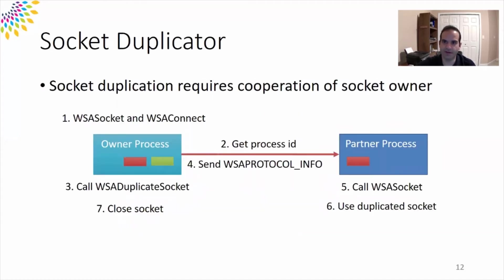Modern operating systems offer socket sharing; however, it requires the cooperation of the socket owner process. Suppose a client process on Windows wants to connect to a remote server and share the resulting socket with a partner process. First, it calls WSASocket and WSAConnect APIs to connect to the remote server. Then it gets the process ID of its partner. Next, it calls WSADuplicateSocket to obtain necessary information to reconstruct the socket. This information is passed to the partner process via an IPC channel. The partner process uses the received information to reconstruct the socket by calling WSASocket. Usually, the client process closes its socket after sharing it with its partner.